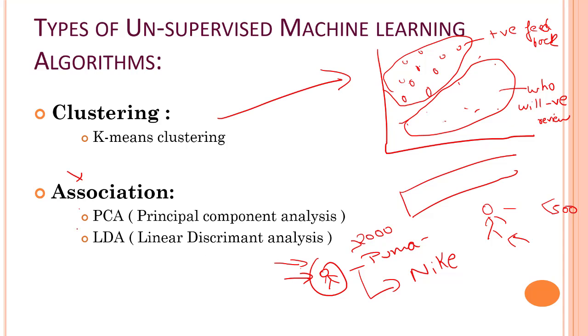So these are the two algorithms that we are going to learn in association, that is PCA and LDA. And in clustering, we are going to learn about k-means clustering. That's it for this video. In our next video, we are going to learn about reinforcement learning.